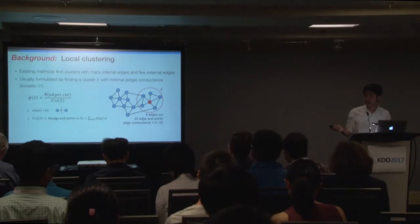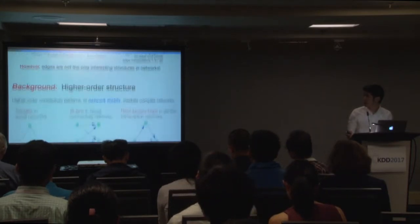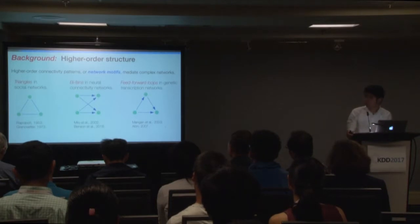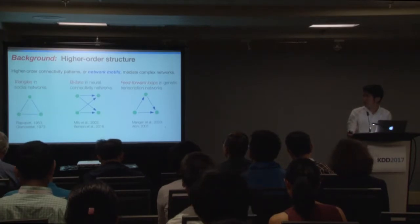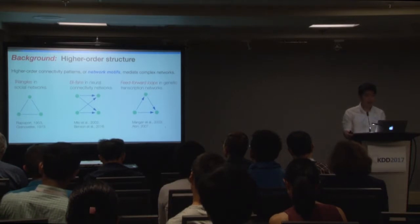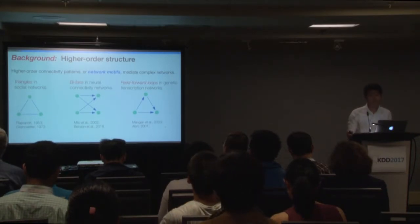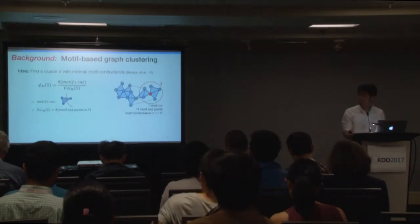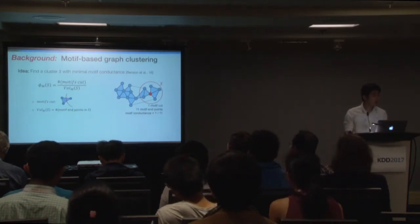However, these clustering algorithms are based on edges, but edges are not the only interesting structure in a network. There is increasing evidence showing that higher-order connectivity patterns, also known as network motifs, are the building blocks of many complex systems. For example, the triangle appears much more frequently in social networks, where the idea is two of my friends are highly likely to meet each other and become friends themselves. Different motifs show up in different domains. If motifs are the fundamental structure of networks, then we should build our clustering method based on motifs.